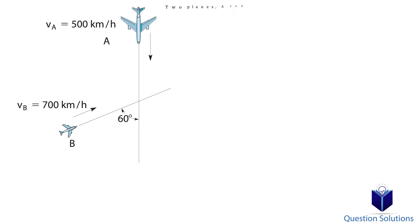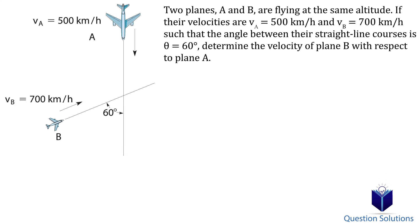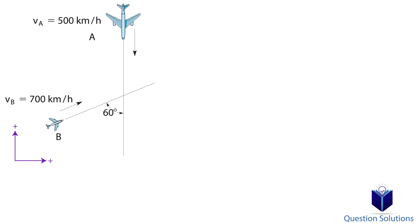In this question, we need to determine the velocity of plane B with respect to plane A. The first step is to establish which sides we will say is going to be positive. We will assume up and to the right to be positive. Next, we need to break down the velocity of each of the airplanes into vector components. Looking at plane A, we see that it's traveling straight down in the vertical direction. That means it will only have the j component, because the i component is zero. So it's negative 500j — negative because it's going down and we chose up to be positive.